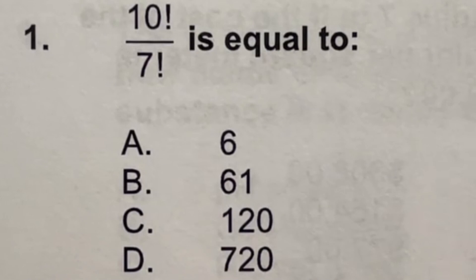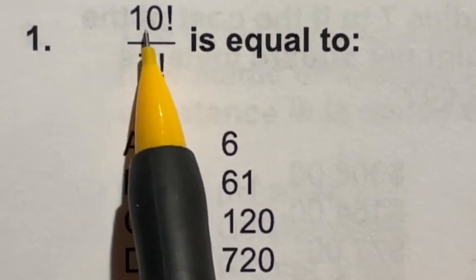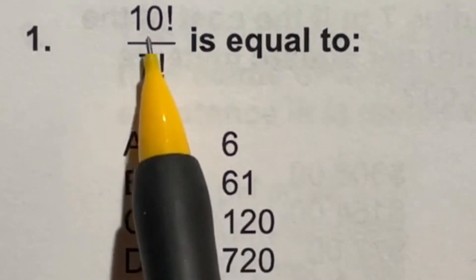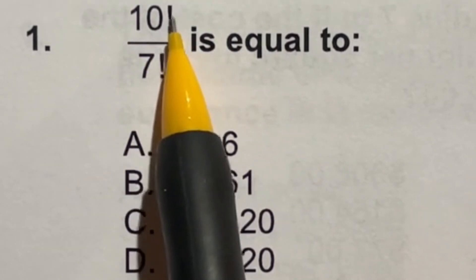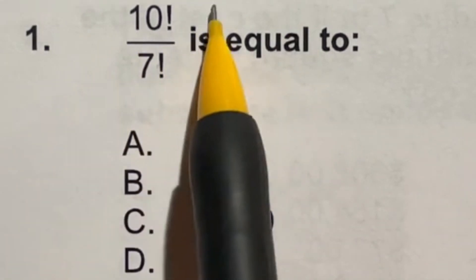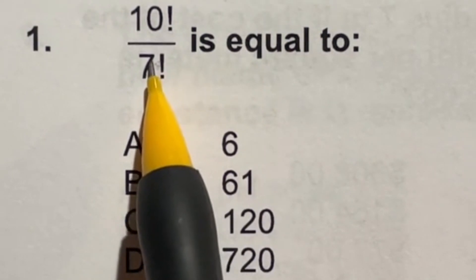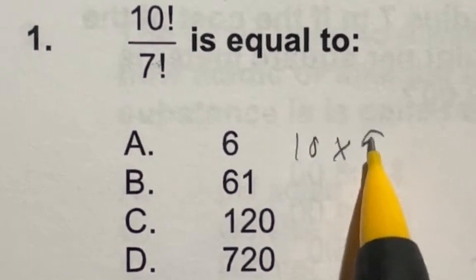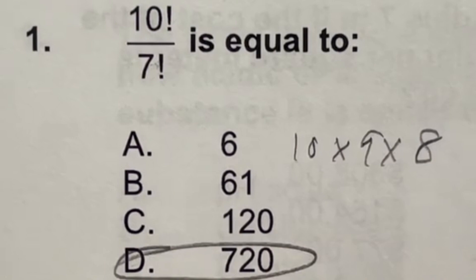So this question we're looking at 10 factorial over 7 factorial. This explanation point means that you're going to take this number and multiply it by every number underneath it. But because of that, we have both that on the top and bottom. So on the top here, 10 factorial is going to go all the way down to 1 and so will 7, but all of the 7, 6, 5, 4, 3, 2, 1 on the top will cancel out with all those numbers on the bottom. So we'll just be left on the top with the 10 times 9 times 8. And in that case, that's going to give us an answer of 720, which is D.